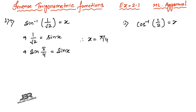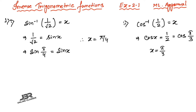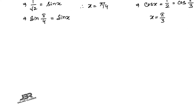Number 2: cos⁻¹(1/2) = x, so cos x = 1/2. Since cos 60° = 1/2, that means cos(π/3) = 1/2, therefore x = π/3.